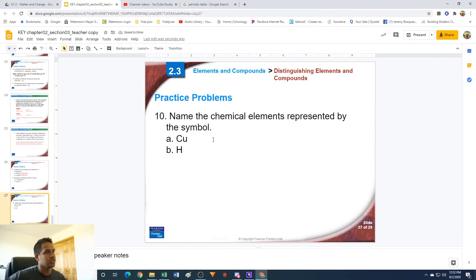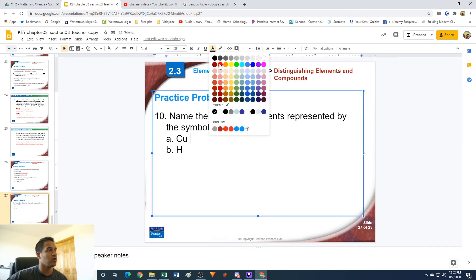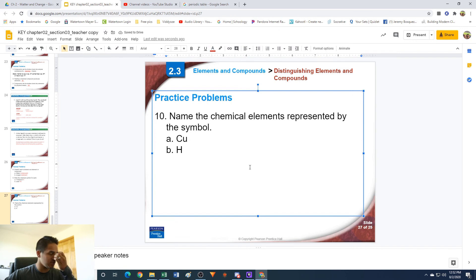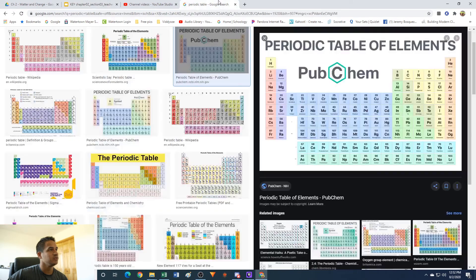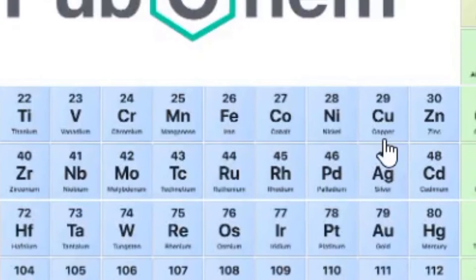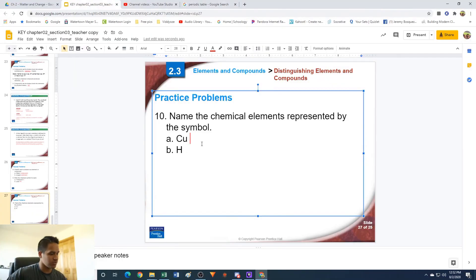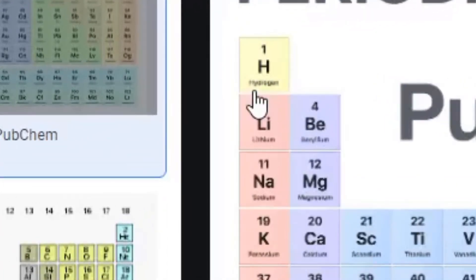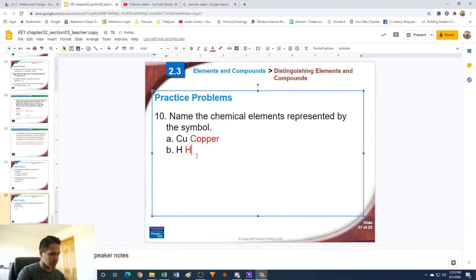Number ten: name the chemical elements represented by the symbol. So now we're going to be naming these. Some of these you might know already just from learning the elements in previous grades, but we're going to use our periodic table. So Cu, look on here and find it. We find Cu right here. This is copper. So chemical symbol of Cu is copper. And H is hydrogen. There you go.